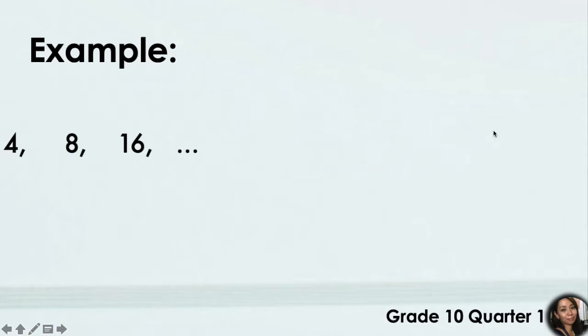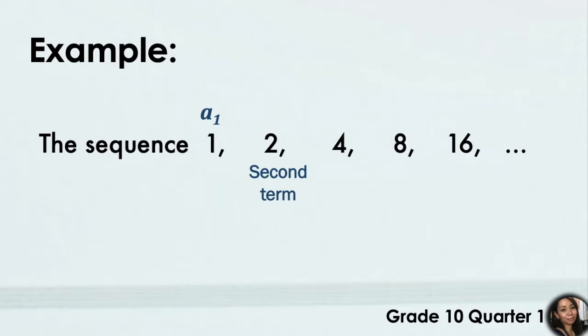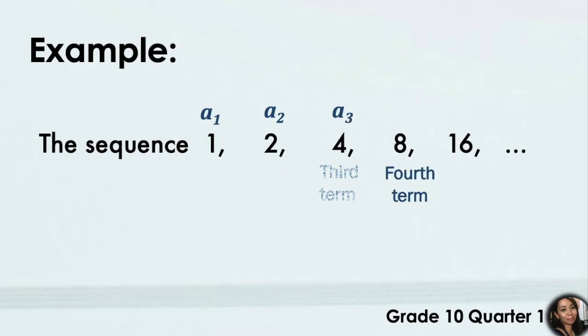The sequence 1, 2, 4, 8, 16, and so on. These numbers are what we call terms. 1 is your first term, denoted by a sub 1. 2 is your second term, denoted by a sub 2. 4 is your third term, denoted by a sub 3. 8 is your fourth term, denoted by a sub 4. And 16 is your fifth term, denoted by a sub 5. The ellipsis tells us that this sequence is infinite.